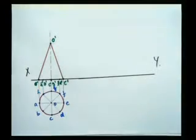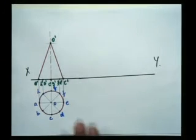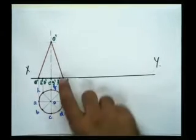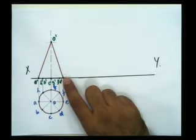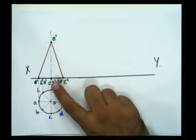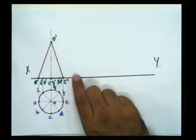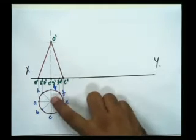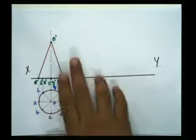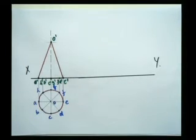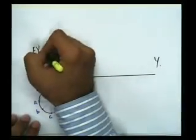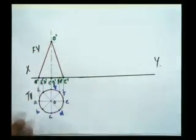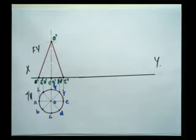This is the initial condition of the cone. This is the front view and this is the top view. The base is lying on HP because when viewing from the front view, the base lies on HP. HP is considered when drawing the front view and VP is considered when drawing the top view. This is the front view and this is the top view.